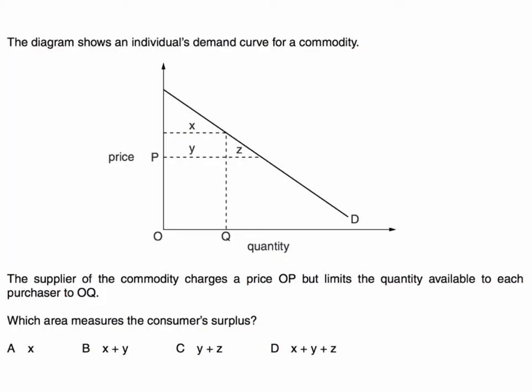Let's have a look at the question. The diagram shows an individual's demand curve for a product, downward sloping demand curve. The supplier charges a price OP, but limits the quantity available to each purchaser to OQ. The question is, which area measures the consumer's surplus?